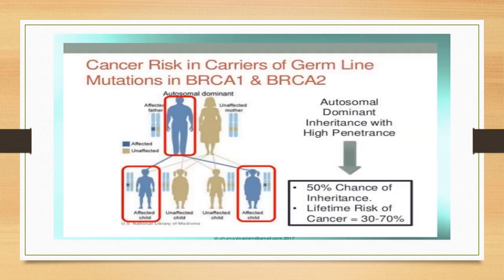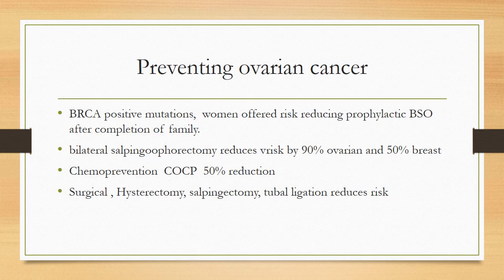BRCA1 and BRCA2 mutations follow an autosomal dominant inheritance pattern with 50% chance of inheritance and a lifetime risk of cancer of 30 to 70%.